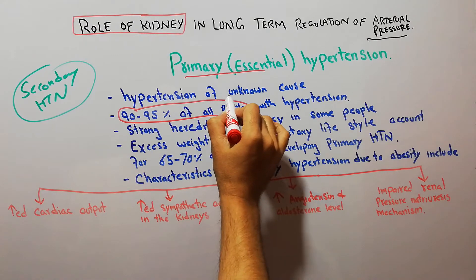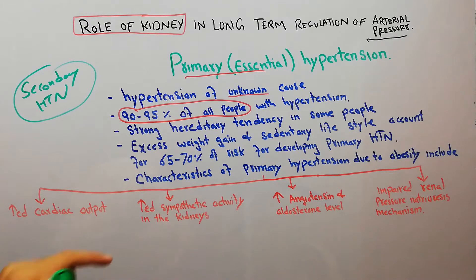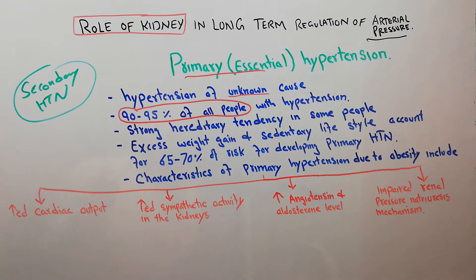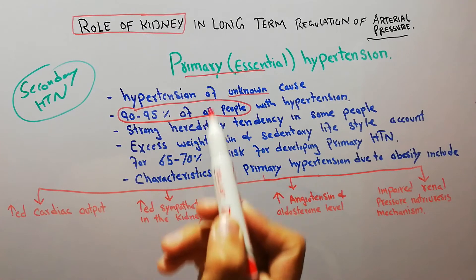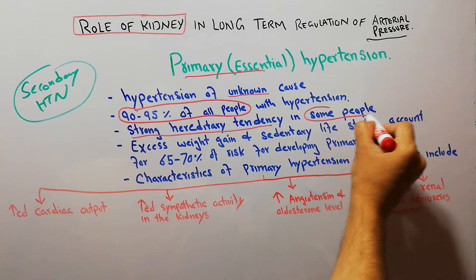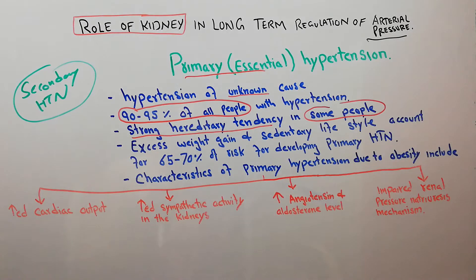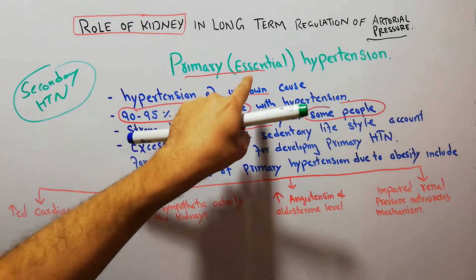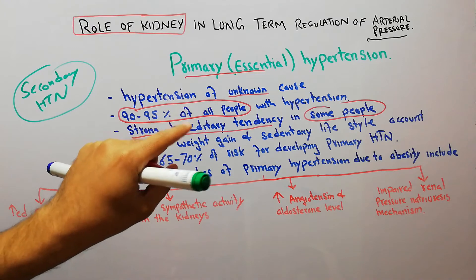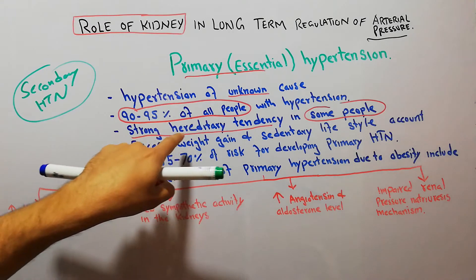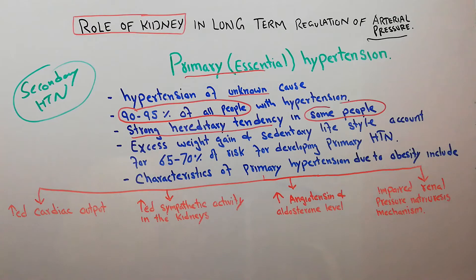Although the exact cause of primary hypertension is not known, there are a lot of risk factors associated with it. In some people with primary or essential hypertension, there is a strong hereditary tendency. They may be absolutely fine, but their siblings or parents will have essential hypertension, so they will also develop it. Primary hypertension runs in families, so one risk factor is hereditary tendency — they acquire it in their genes.